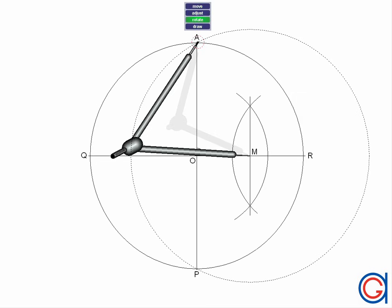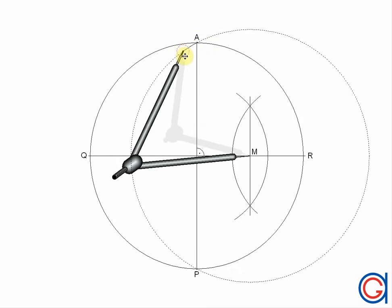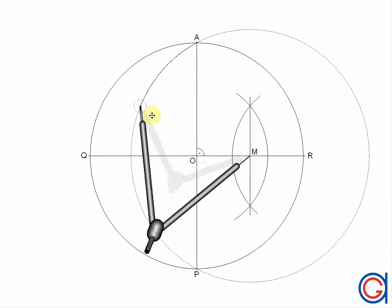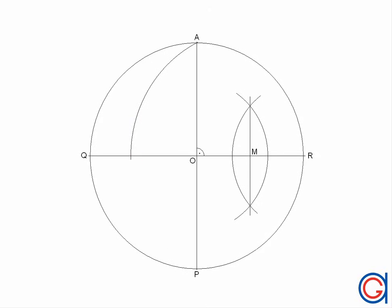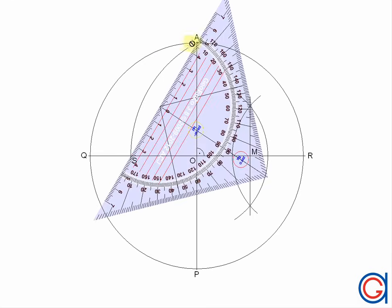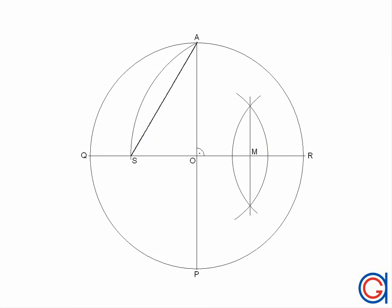Now with our compass centered on M and radius MA, we scribe an arc to the left until it cuts our horizontal diameter QR. We will call this point S. Now we join point S to point A with a thicker line, and this line segment SA will be the length L of one side of our pentagon.